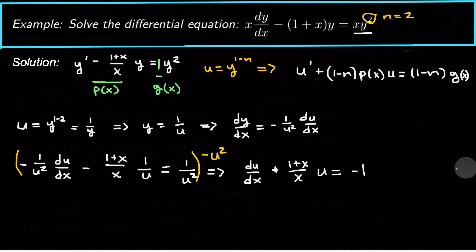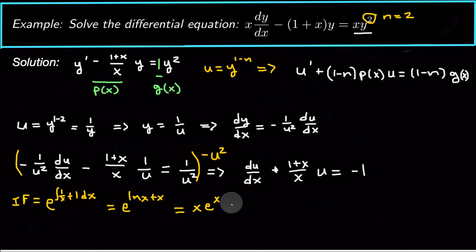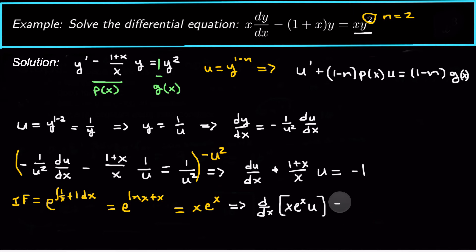Now we solve this linear differential equation using the integrating factor. The integrating factor is e to the integral of (1/x + 1) dx, which equals e to the (ln x + x), which simplifies to x · e^x. So we can write this as d/dx of [x · e^x · u] equals negative x · e^x.